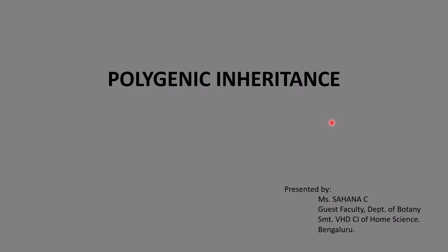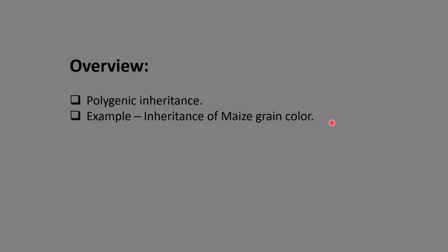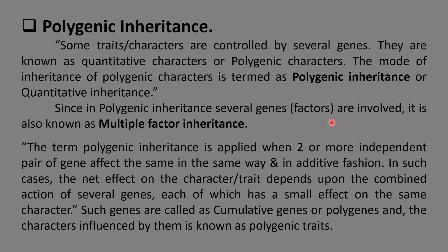Hello, this is Sahana here with the concept of polygenic inheritance. Some traits are governed by one or few genes; such traits are referred to as qualitative characters, oligogenic characters, or monogenic inheritance. There are other characters controlled by several genes — two or more genes — and such characters are called quantitative characters or polygenic characters.